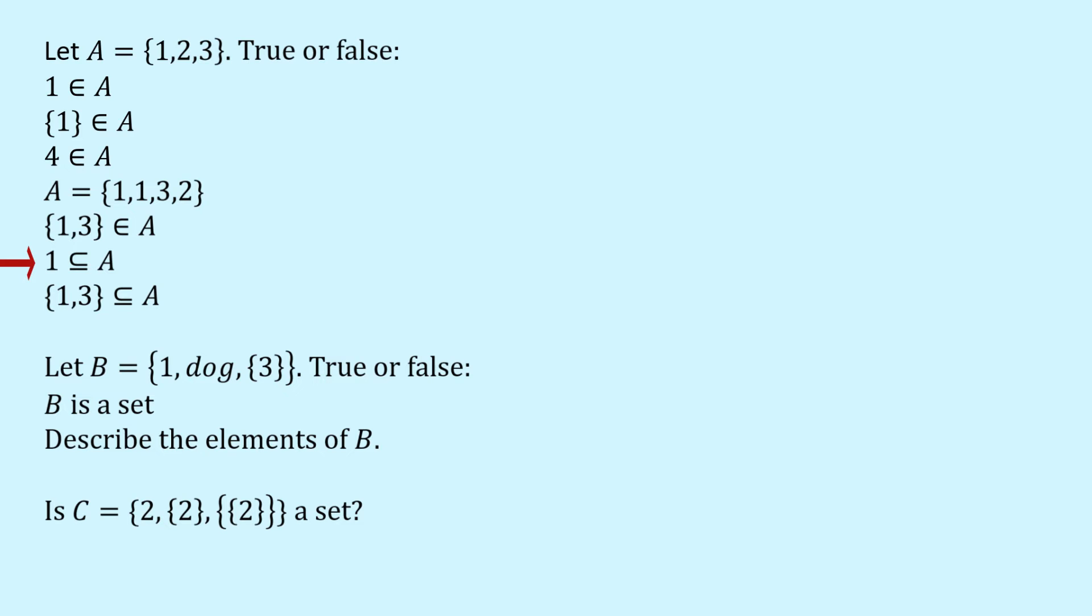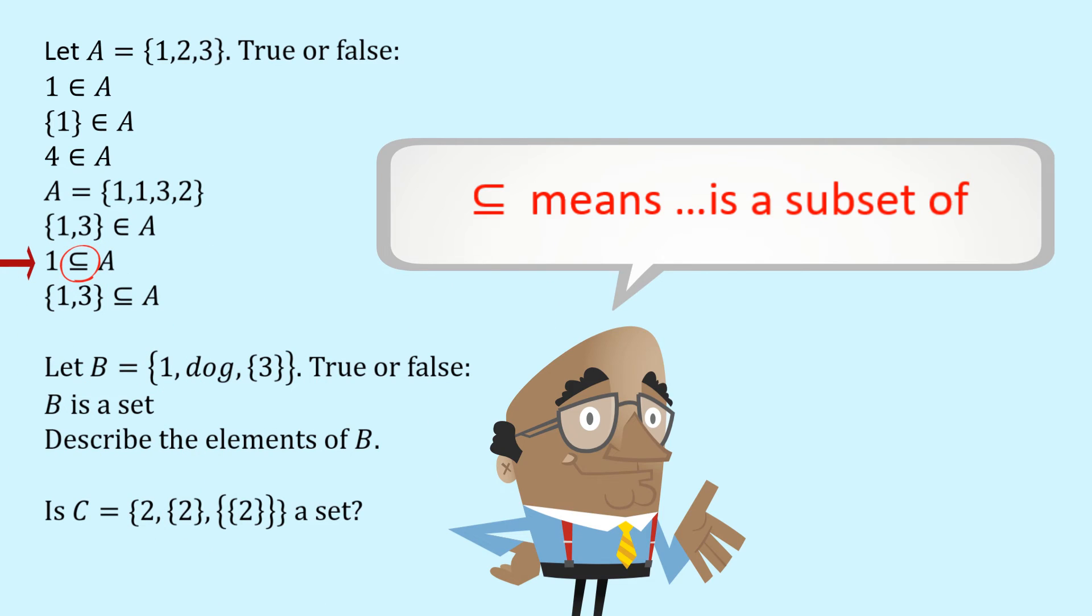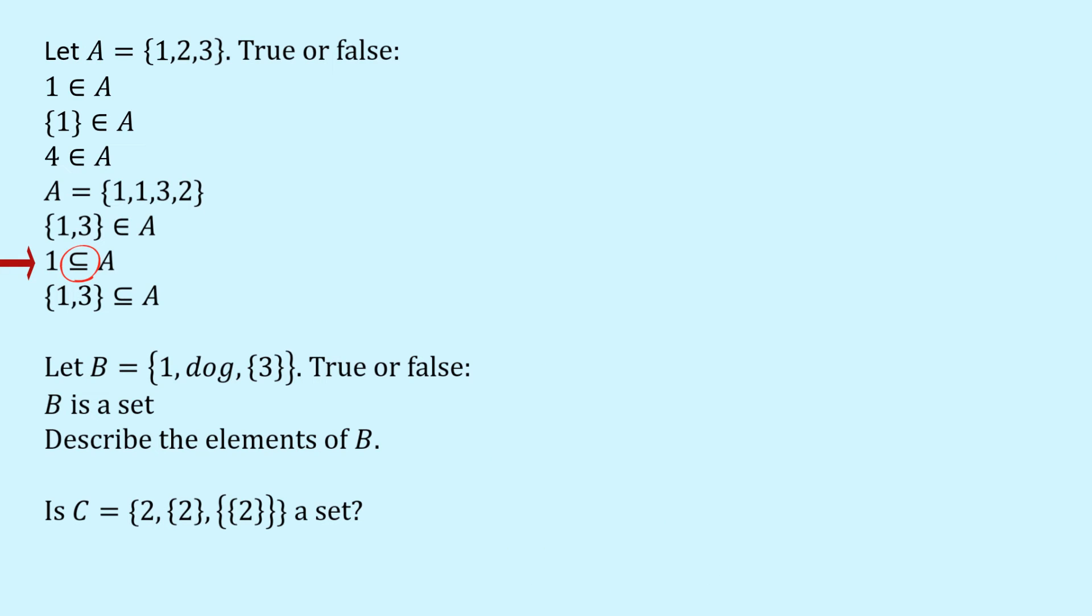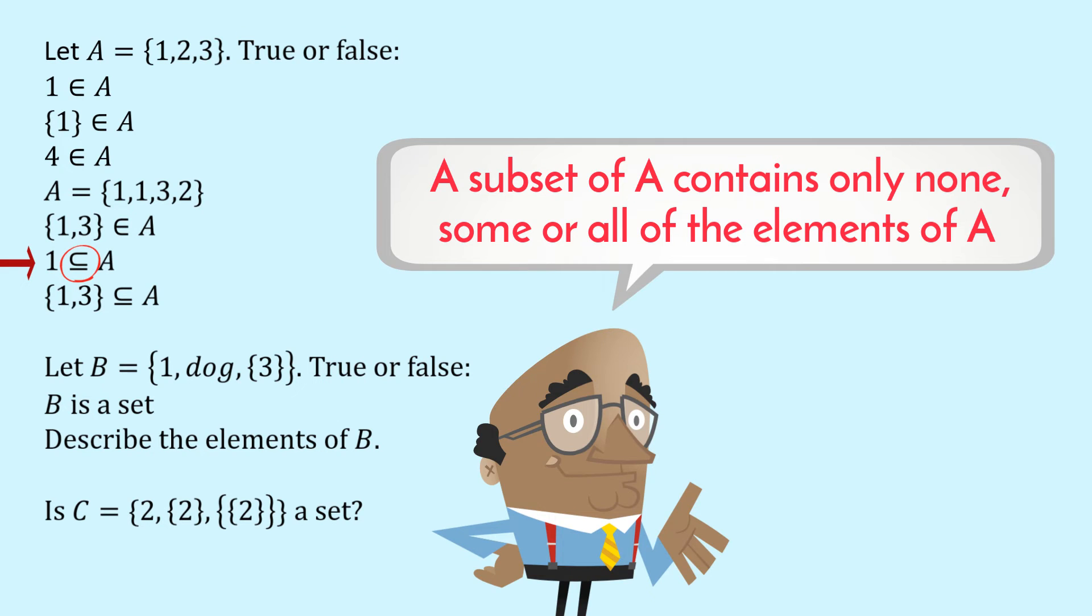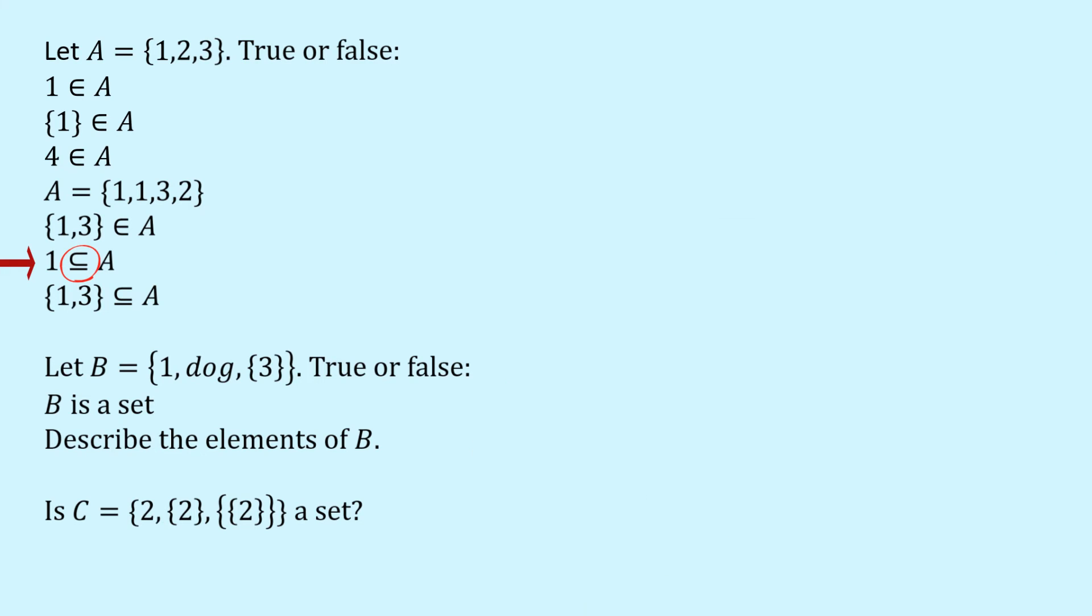What about this one? What's this symbol? Well this symbol is read as is a subset of. So this is saying 1 is a subset of A. So what's a subset? Well the first thing is it's got the word set in it. A subset is a set. And the second thing is that a subset of A must contain only none, some or all of the elements of A. Now in this case here 1 is not a set and so it can't be a subset. So this is false.